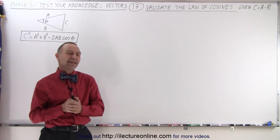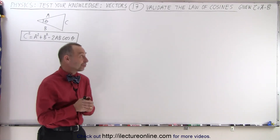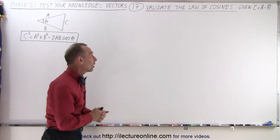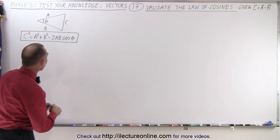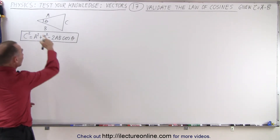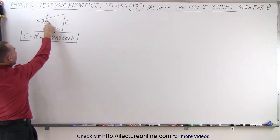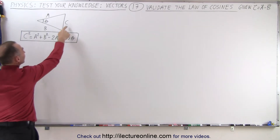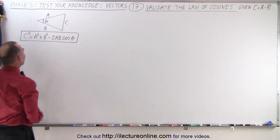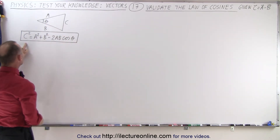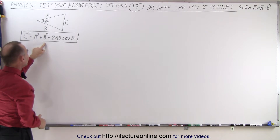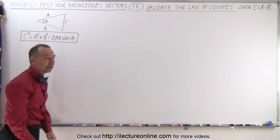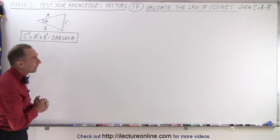Welcome to our lecture online. Here we have an interesting way of trying to show or prove the law of cosines. Now we're probably familiar with the law of cosines. If we have a triangle with an angle, let's call it theta, between sides A and B, and C is opposite to the angle theta, we can then say that C squared equals A squared plus B squared minus twice the product of A and B times the cosine of the angle between them.